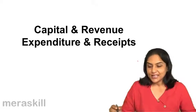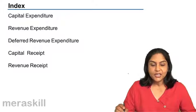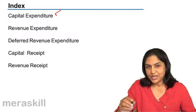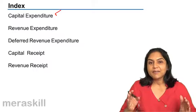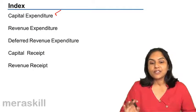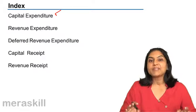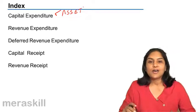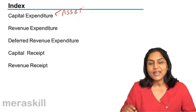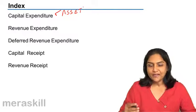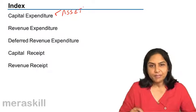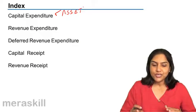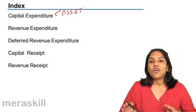Let us understand this further. We will first understand what is capital expenditure. When we spend money and we say it is capital expenditure, it is taken to the balance sheet — it becomes an asset. So a capital expenditure is what we have so far defined or understood as an asset. The reason for this discussion is that some items of expenditure may be a little difficult to decide whether they are capital expenditure or revenue expenditure.